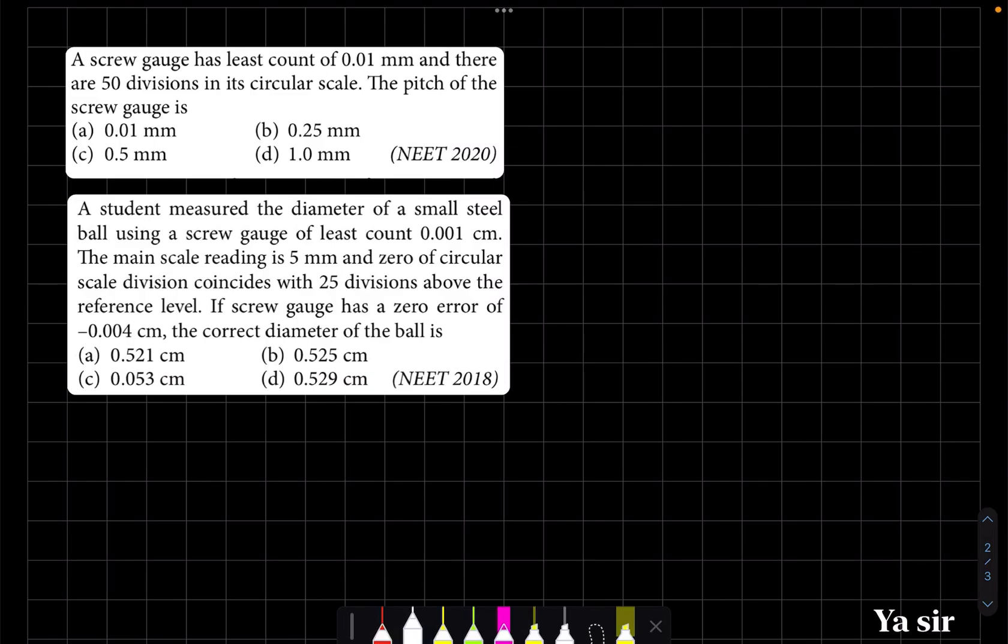Hi everyone, in this video we'll solve two screw gauge questions from NEET 2020 and 2018. The first question is straightforward: a screw gauge has a least count of 0.01 millimeter and there are 50 divisions in the circular scale.